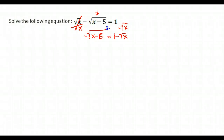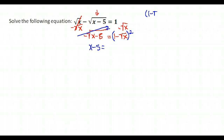We remove the radical by squaring both sides. And again, we have two terms over here. Remember, squaring means to multiply it by itself. So we are multiplying — I'm going to go over to the side here — 1 minus the square root of x times 1 minus the square root of x.